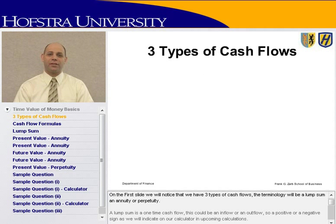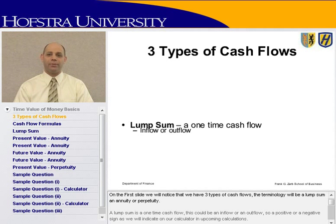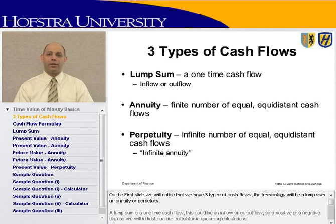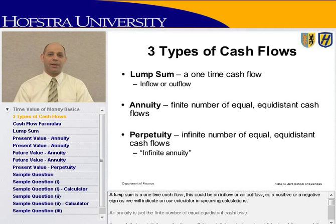On the first slide, we will notice that we have three types of cash flows. The terminology will be a lump sum, annuity, or perpetuity. A lump sum is a one-time cash flow. This could be either an inflow or an outflow — a positive or a negative sign, as we'll indicate on our calculator in upcoming calculations.